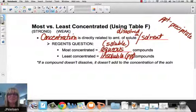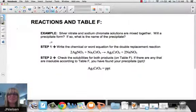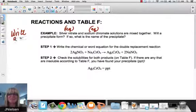So let's take a look at some examples where Table F, you would have to use this. Silver nitrate and sodium chromate solutions are mixed together. So this means that these two are both aqueous. They've been mixed with water. Will a precipitate form? And if so, what is the name of the precipitate? So two things come into play here. You have to be able to write a reaction, and you also have to use Table F to determine whether a precipitate forms.